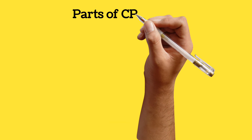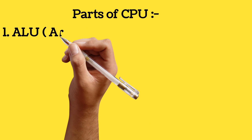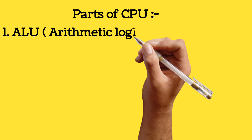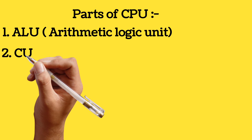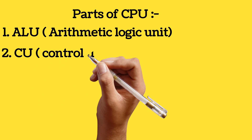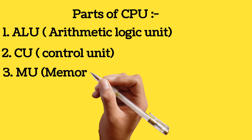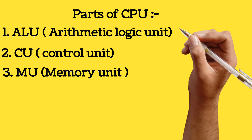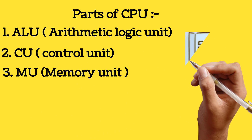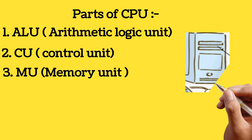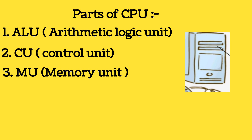Parts of CPU: ALU — Arithmetic Logic Unit, CU — Control Unit, MU — Memory Unit. CPU is the brain that tells which parts to work.